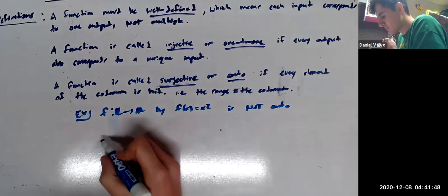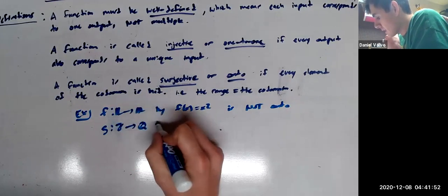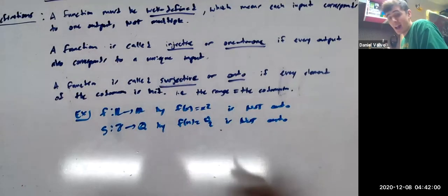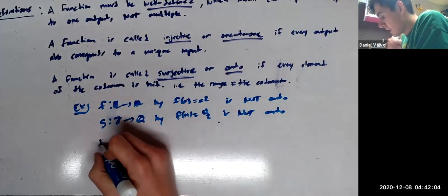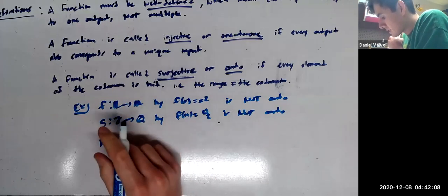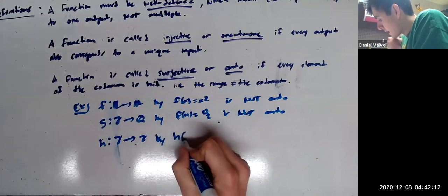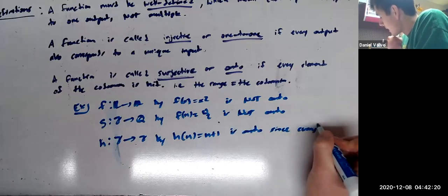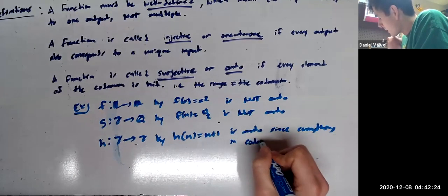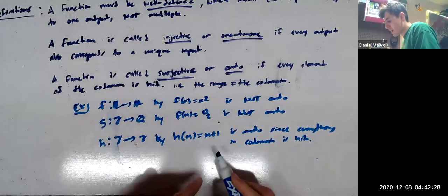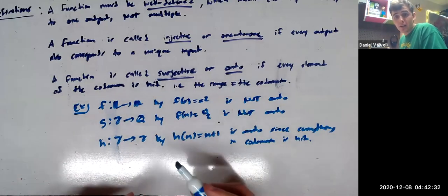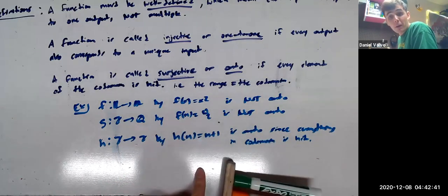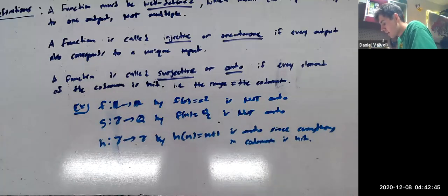The function g from Z to Q by g of n equals n over 2 is also not onto, because again not everything is hit. But the function h from Z to Z by h of n equals n plus 1 is onto, since everything in the codomain is hit. If you take anything in the codomain — think of the number 55 — well, h of 54 equals 55. So any number you give me in the codomain, I can find an input that maps to it. That means it's onto.